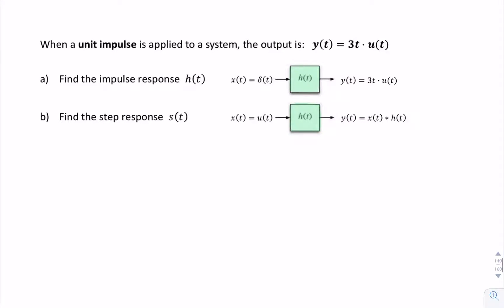In this question, we're told that when we have a unit impulse applied at the input to a system, the output is 3t u(t). So we know that the input is an impulse, and that's the output.